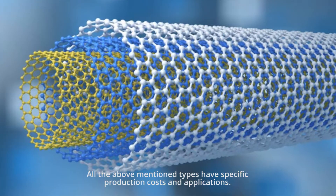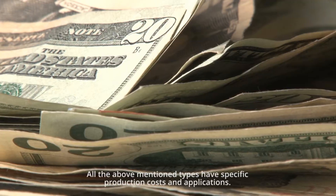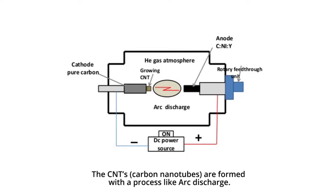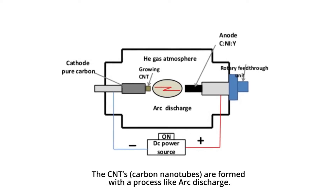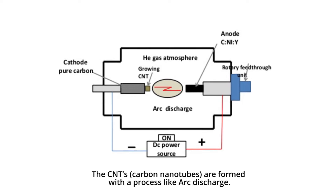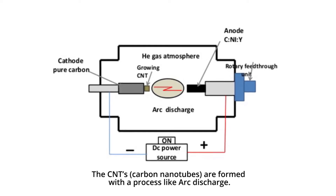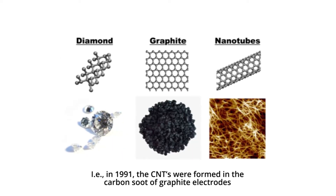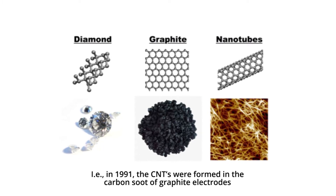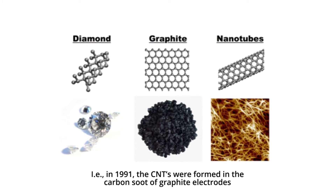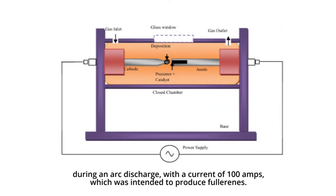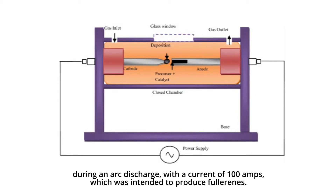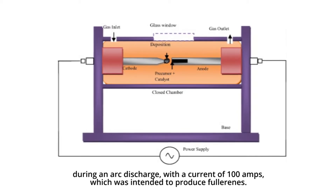All the above mentioned types have specific production costs and applications. The CNTs, carbon nanotubes, are formed with a process like arc discharge. In 1991, the CNTs were formed in a carbon soot of graphite electrodes during an arc discharge with a current of 100 amps, which was intended to produce fullerenes.